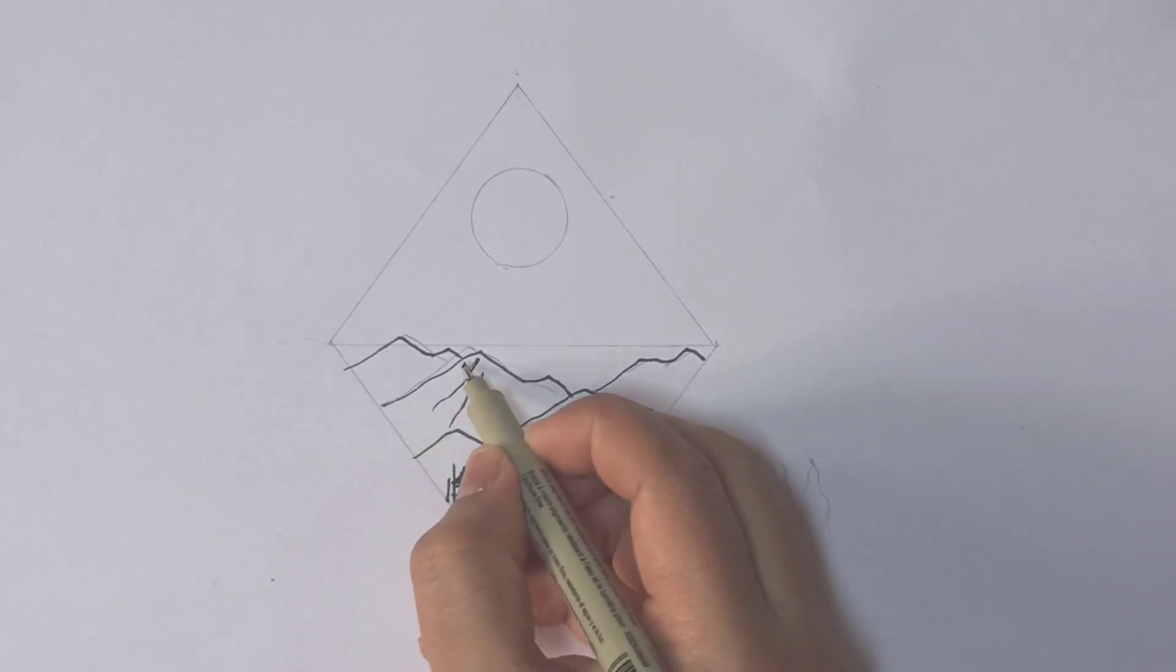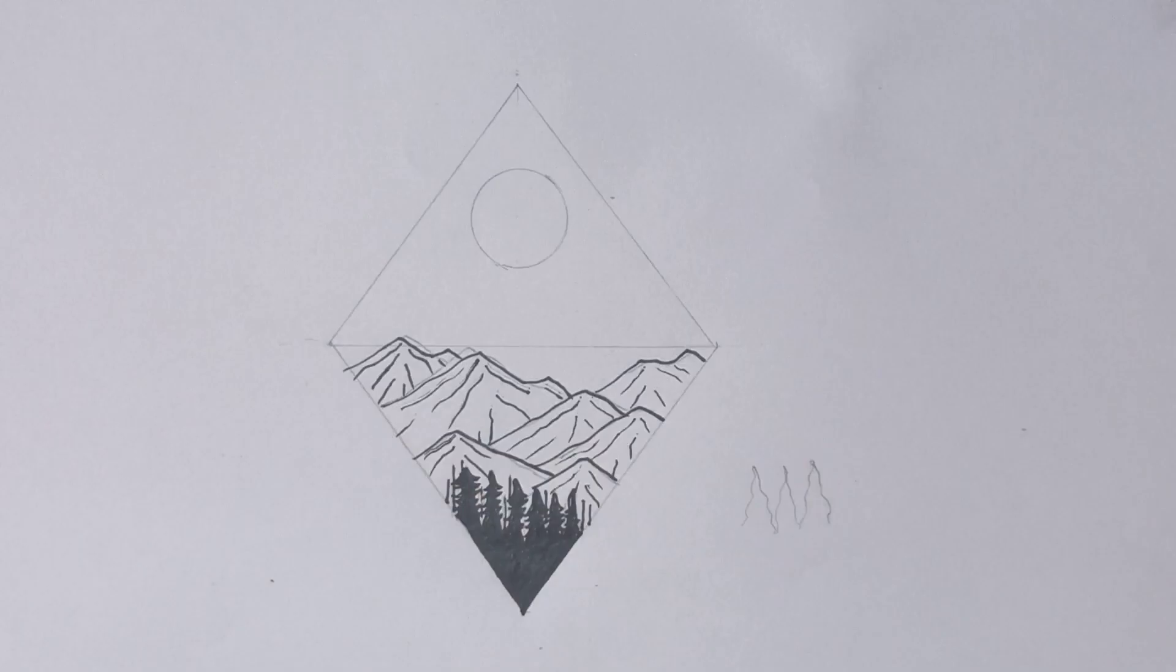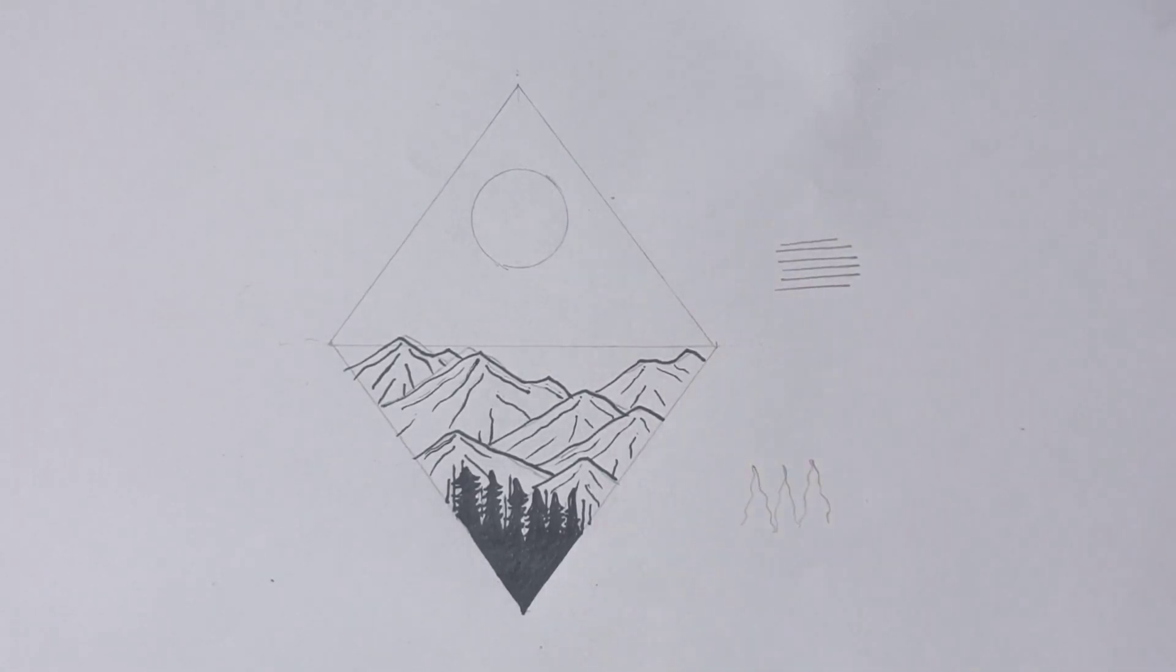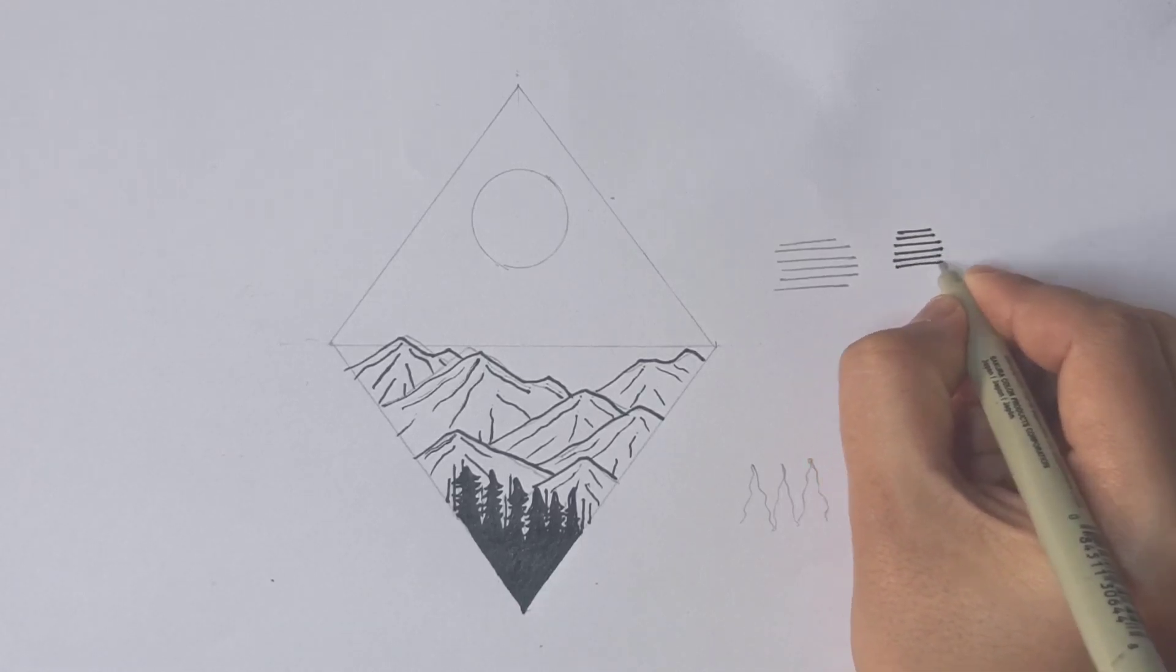Now giving slopey lines to mountains. This set of short lines called hatching which we are going to use in our artwork.